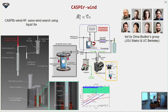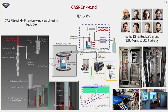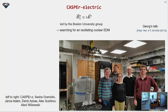CASPER Wind high frequency is being built right now, trying to go to higher frequencies - up to hundreds of megahertz. This uses hyperpolarized liquid xenon. There are pictures of the hardware; the xenon polarizer is currently working and hopefully we'll have some first results early next year.